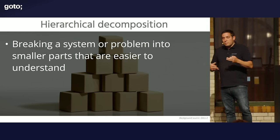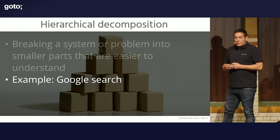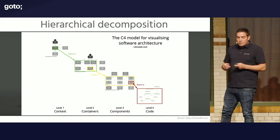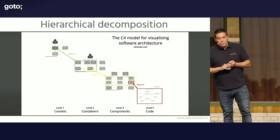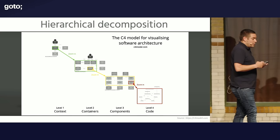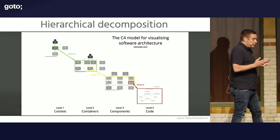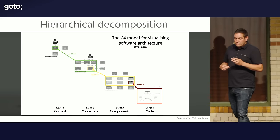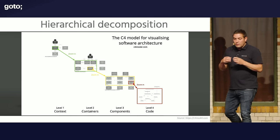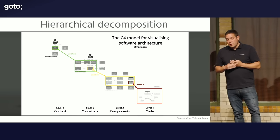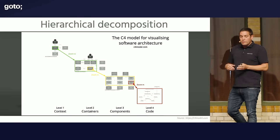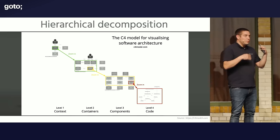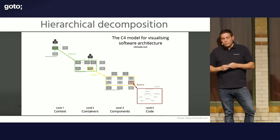It's about breaking a system or problem into smaller parts you can easily understand. Another approach is the C4 model from Simon Brown for software architecture. Simon defined four levels: the overall system and its context, the high-level containers, the next level of individual components, and the fourth level of actual code. This helps in reasoning about systems at the right level.